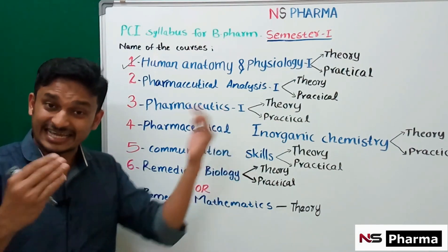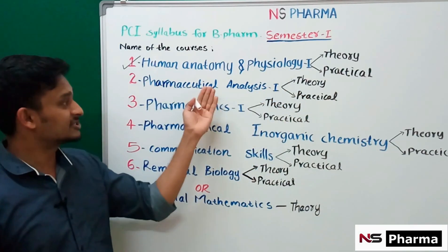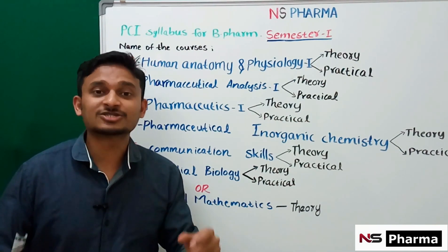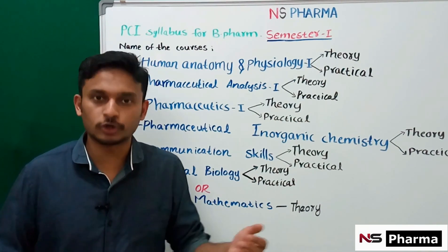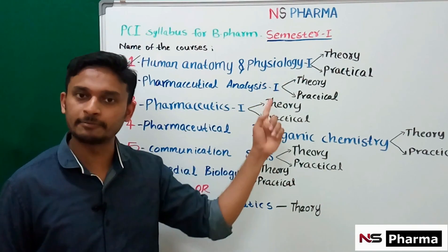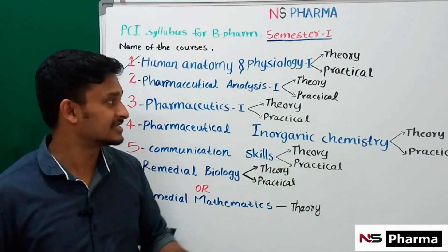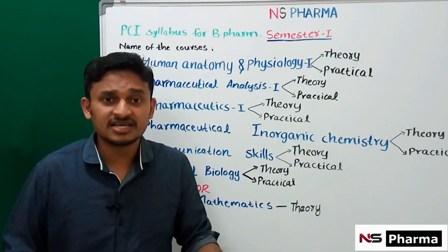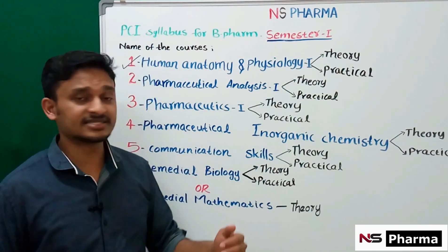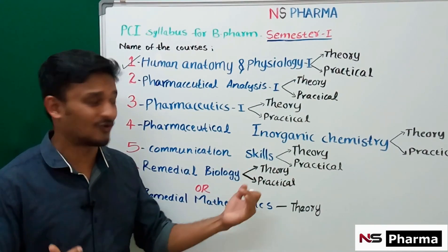The second subject is Pharmaceutical Analysis One. In the theory part, we study different types of titrations and electrochemical methods of analysis like conductometry and potentiometry. In the practical section, we perform limit tests, assays, and preparation and standardization of some compounds.